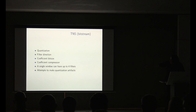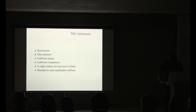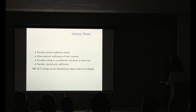So you quantize the coefficients, put the filter direction, and the coefficient bit size — which is usually four bits, but when you have eight short windows you don't need that precision, so you opt for a simpler three-bit coefficient instead. We also implemented multiple filters and the directional switching feature. That covers TNS.